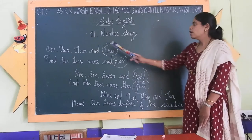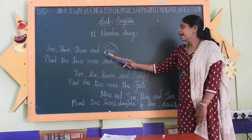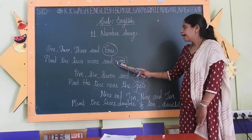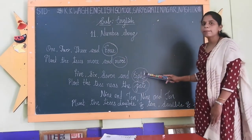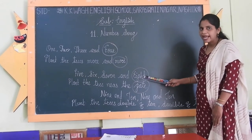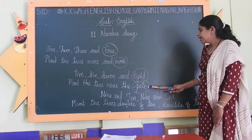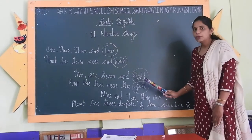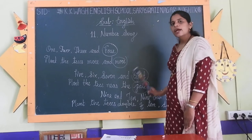Once again — the first pair: 4, spelled F-O-U-R, and more, spelled M-O-R-E. Second pair: eight, spelled E-I-G-H-T, and gate, spelled G-A-T-E. These are the two pairs of rhyming words in this poem.